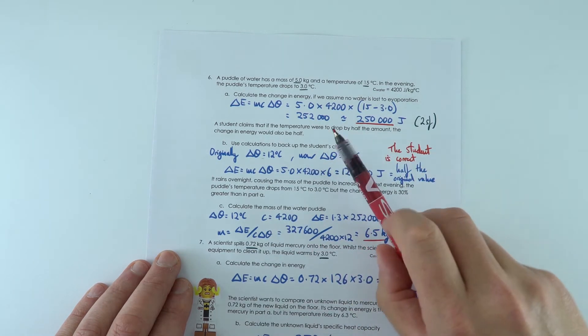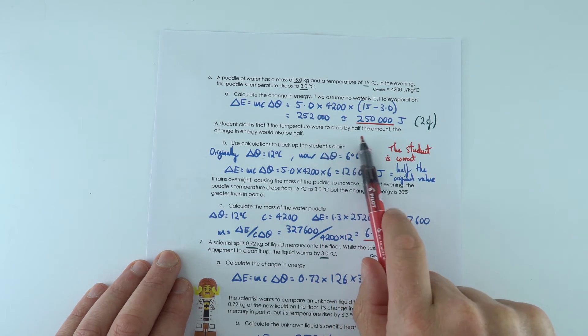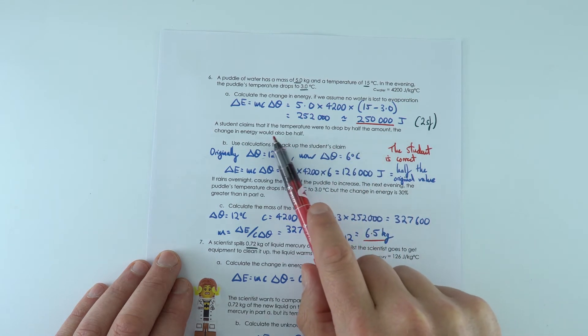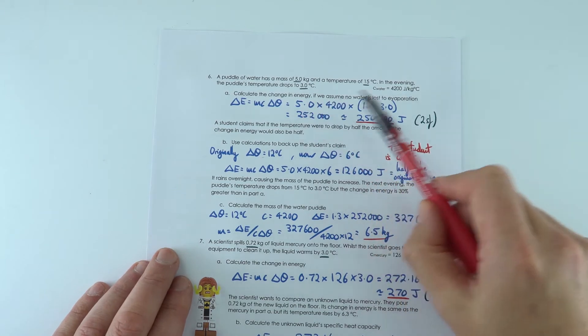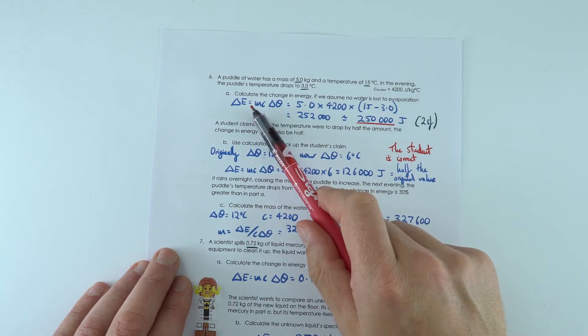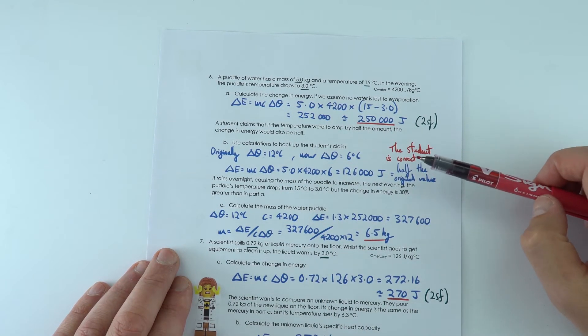Now for the next one, if the temperature were to drop by half the amount, the change in energy would also be half. That's absolutely true. Because effectively, if you've got half the change in temperature, you'd then have half the change in energy. So the student's correct.